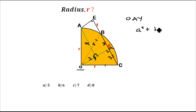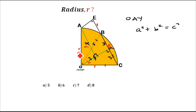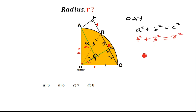Using Pythagoras' theorem, a² + b² = c², where R is the hypotenuse c. Letting the side of length 4 be a and the side of length 3 be b, we get 4² + 3² = R². So R² equals 16 plus 9, which is 25.